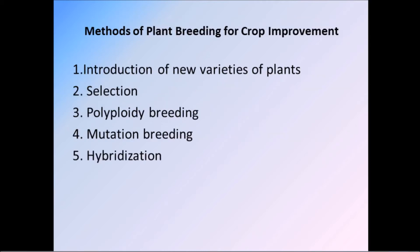Methods of plant breeding for crop improvement: to improve crops through plant breeding there are some methods. First method is introduction of new variety of plants. Second is selection — selecting which type of plant to improve accordingly. Next is polyploidy breeding, mutation breeding, and then hybridization. Let us see them one by one.